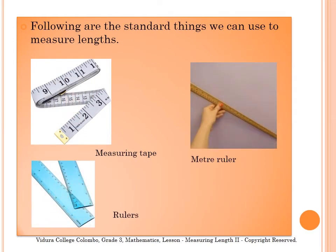Ok children, let's see what are the standard things you can use to measure lengths. The first one is called a measuring tape. The next one is a metre ruler. And finally, the last ones are rulers.